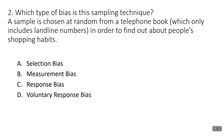Example two: a sample is chosen at random from a telephone book, which only includes landline numbers, in order to find out about people's shopping habits. This is selection bias. Choosing numbers from the phone book used to be an okay technique, but now it's not because most people don't have landlines and aren't listed. You're going to end up with a lot of older people in your survey, since older people tend to have landlines and younger people tend not to.